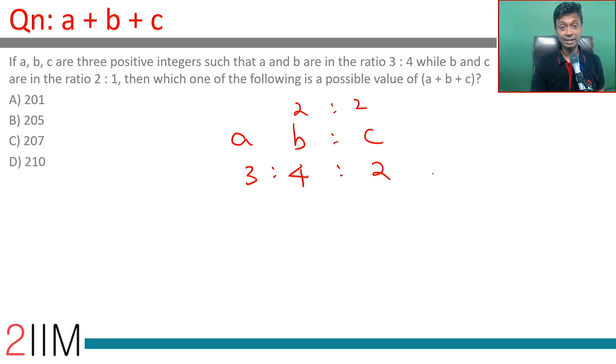With positive integers, there could be 3n, 4n, and 2n. If you add everything, the total is 9n, so a+b+c should be a multiple of 9.